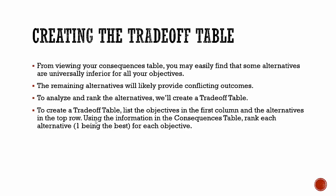From viewing your consequences table you may easily find that some alternatives are universally inferior for all of your objectives. The remaining alternatives will likely provide conflicting outcomes. To analyze and rank the alternatives we'll use a trade-off table. To create a trade-off table, list the objectives in the first column and the alternatives in the top row, just like we did with the consequences table.